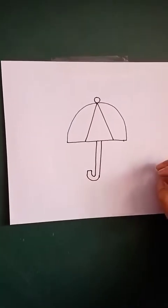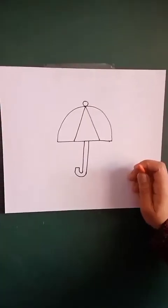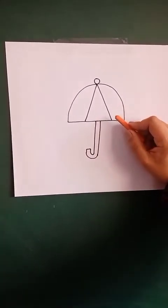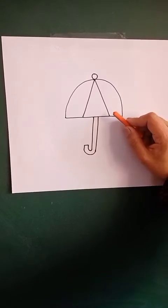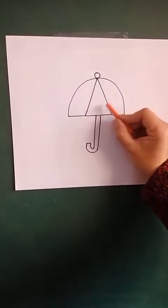What is this? This is an umbrella. Now we will color it. In the umbrella, you can do any color. Umbrella has different colors. Use three different colors to color this.